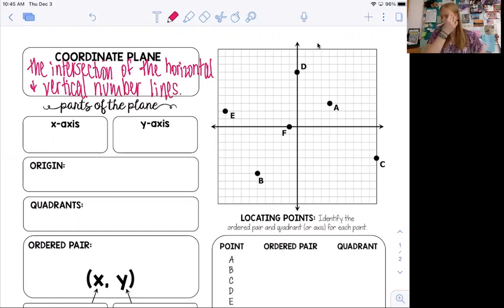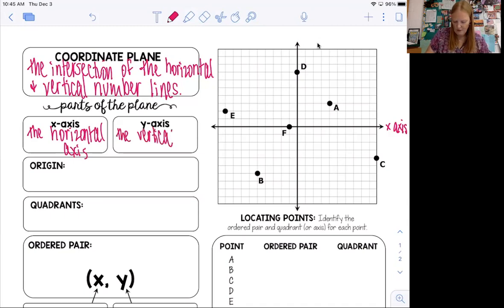Let me get that little red dot. It is the intersection of the horizontal and vertical number lines. Okay, so that thing to the right is the coordinate plane. Like we said earlier, the x-axis is the horizontal axis, so it's the one that goes from side to side, so I'm going to put x-axis over here.